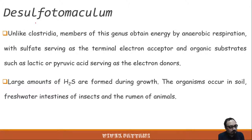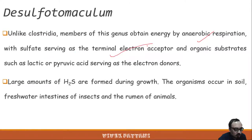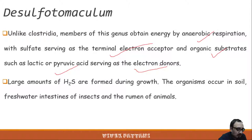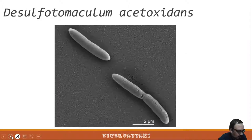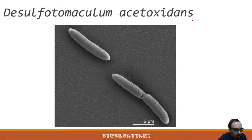Desulfotomaculum, unlike Clostridium, obtains energy by anaerobic respiration with sulfate serving as a terminal electron acceptor. Clostridium does not use sulfate — it uses other organic substrates. Desulfotomaculum can also use organic substrates such as lactic or pyruvic acid as electron donors, and large amounts of hydrogen sulfide are produced during growth. These organisms occur in soil, fresh water, the intestines of insects, and the rumen of animals. This is a scanning electron micrograph of Desulfotomaculum acetoxidans.